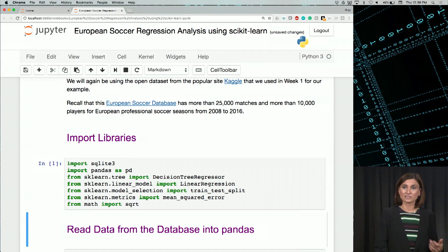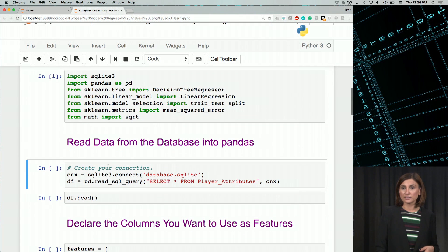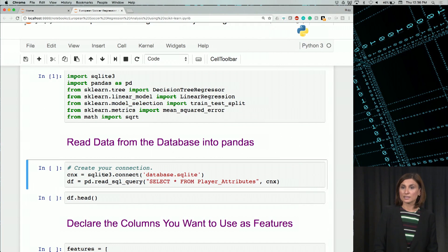And then let's check out that data frame. What we are doing here is we are connecting to the data set, and we are using this connection to select the player attributes and load them into a data frame called df.